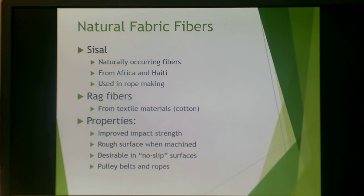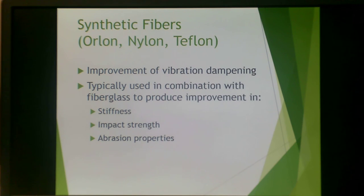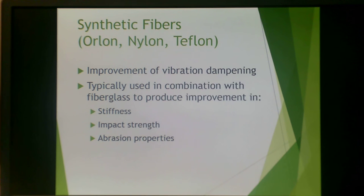There are also a variety of natural fabric fibers used as fillers. Sisal is one of these, naturally occurring from Africa and Haiti, and is also used extensively in rope making. Rag fibers, which are often cotton, come from textile-type materials. These fibers improve impact strength and provide a rough surface when machined, which is desirable in no-slip surfaces such as pulleys and belts. Synthetic fibers including Orlon, Nylon, and Teflon improve vibration dampening. When combined with fiberglass, synthetic fibers yield really good stiffness, impact strength, and anti-abrasion properties.